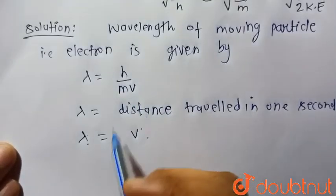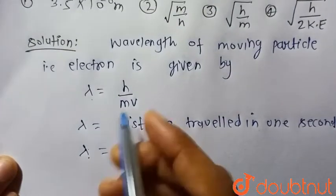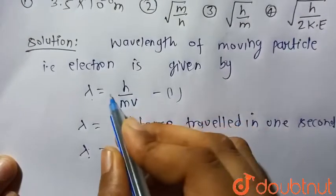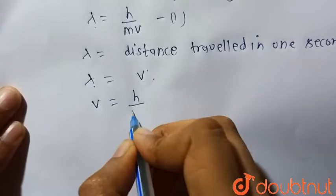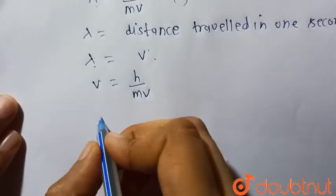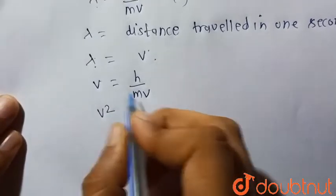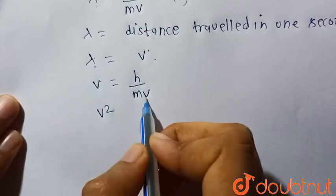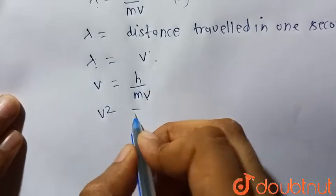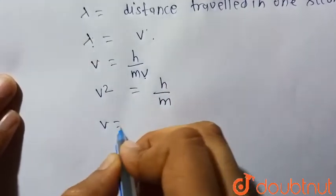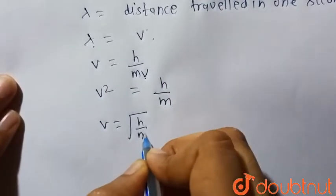If we put v at the place of lambda in the de Broglie equation, we will get v equals h upon mv. This v when goes to the left-hand side, since it is in division it will be in multiplication. So v squared is equal to h by m, therefore v is equal to under root h by m.